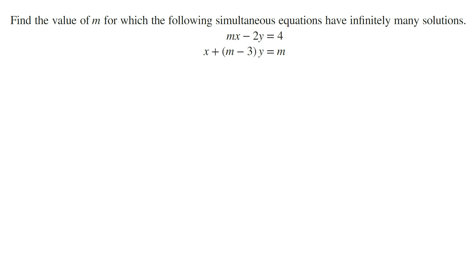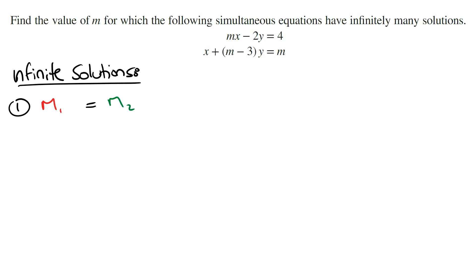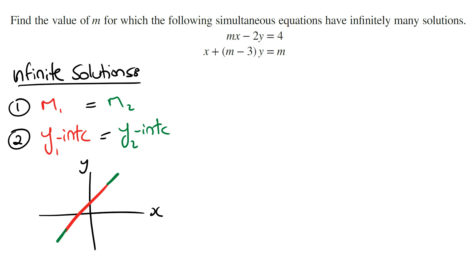Find the value of m for which the following simultaneous equations have infinitely many solutions. For two linear equations to have infinitely many solutions, it must satisfy two conditions. The first condition is that the gradient of the lines must be the same, and the second condition is that the y-intercepts of the lines must also be the same. In other words, both equations are going to be identical — the lines will be exactly the same.